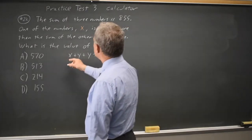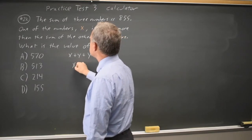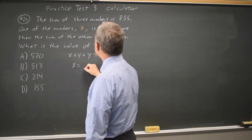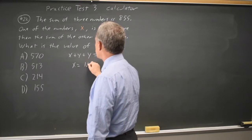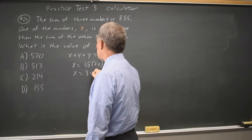So the sum of three numbers is 855 and x is 50% more than the sum of the other two. So that's 1.5 times 2y. So x equals 3y.